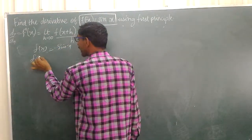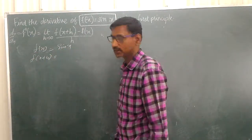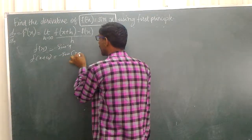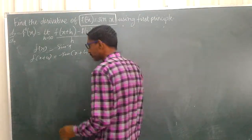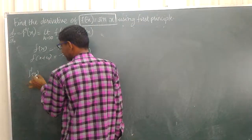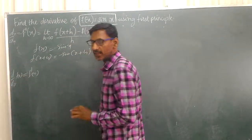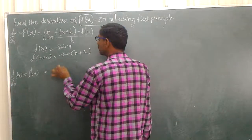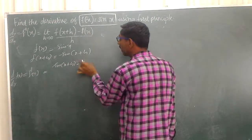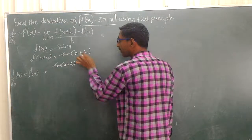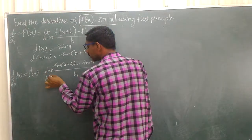So f(x+h): in place of x we take x+h, giving sin(x+h). Then f'(x) is d/dx of f(x). The expression becomes limit h tends to 0 of [sin(x+h) - sin(x)] / h.